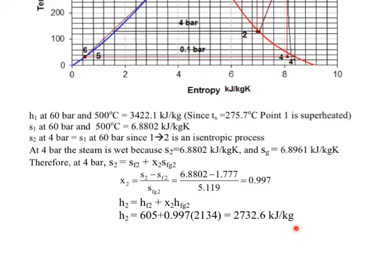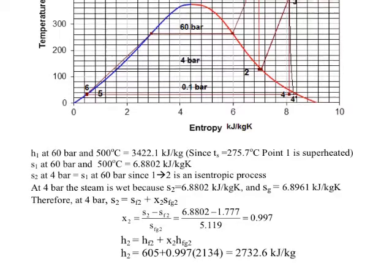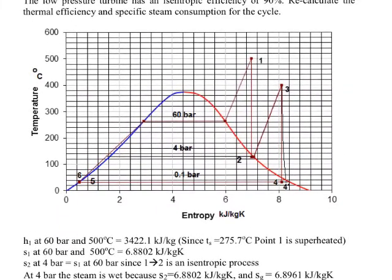We now press on to get H3. Now let us get back to our temperature entropy diagram to see where we are. We have got H1. We got H2. So now we are reheating the steam at constant pressure, we are told, to 400 degrees. So what we need to do is to go to 4 bar and 400 degrees to read off the enthalpy directly, that is getting H3.